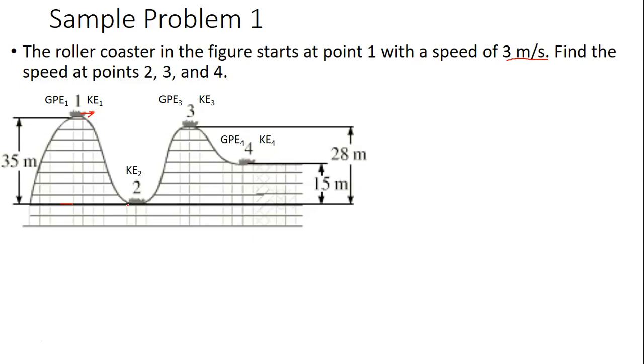In order to find the speed at point 2, we want to set our initial scenario at point 1 equal to our final scenario at point 2. So we're going to say GPE₁ plus KE₁ equals KE₂. Now we can go ahead and plug in our formulas for those types of energy. So we'll have mgh₁ plus ½mv₁² equals ½mv₂². I'm using these subscripts to indicate which point I'm getting and using information for.